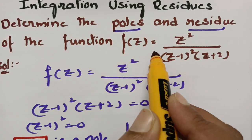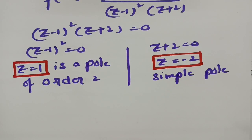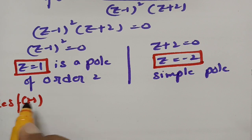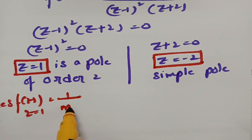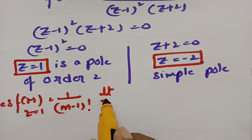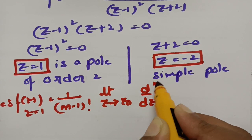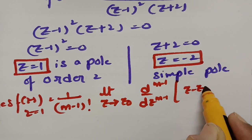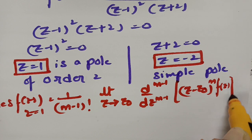After finding the poles of the given function, we have to find the residues for the corresponding poles. The formula for residue at a pole of order m is: (1/(m−1)!) × lim[z→z₀] d^(m−1)/dz^(m−1) [(z−z₀)^m × f(z)].